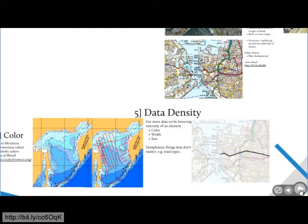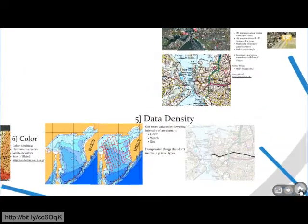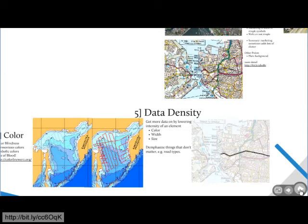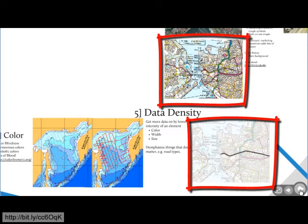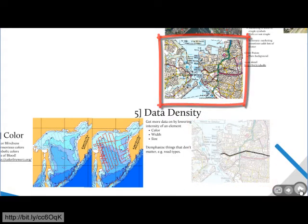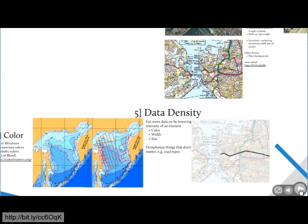My fifth tip is about data density, which is related to the last two points. Work out what you want to emphasize and emphasize it — by making its color stand out, by increasing its width or size. The map on the right is Portsmouth again, and I've emphasized the railway, which you can't really pick out in the unmodified map. I've faded the background to de-emphasize it. Think about what's important and what you want to de-emphasize — anything you can de-emphasize, you should, to pack as much data density into your map as possible.